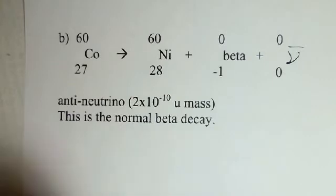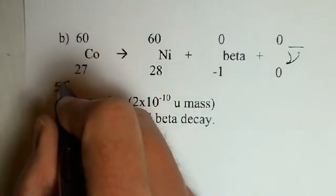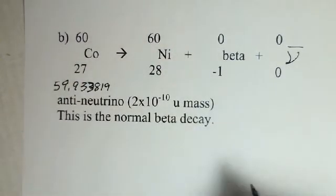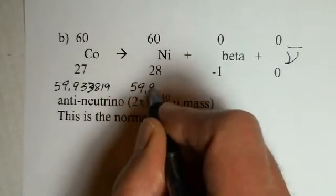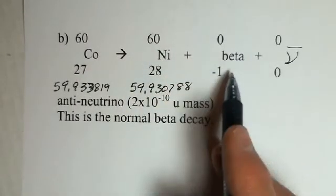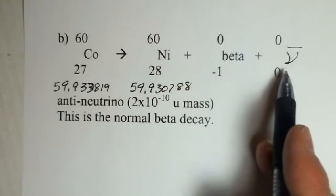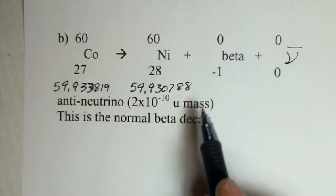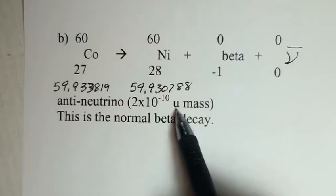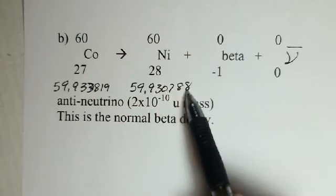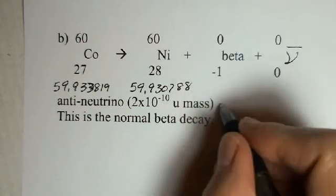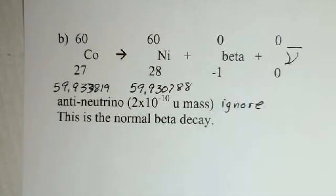So again, we go to a table and look up the masses. Our cobalt-60 is 59.933819. The nickel-60 is 59.930788. And what about these two, the beta and the anti-neutrino? Let's talk about the anti-neutrino first. They're almost zero mass. And their mass is uncertain, but it's on the order of 2 times 10 to the minus 10 atomic mass units. That's 1, 2, 3, 4, 5, 6, 7, 8, 9, out to here. It's ignorable. We're not going to include the anti-neutrino mass in our calculation.